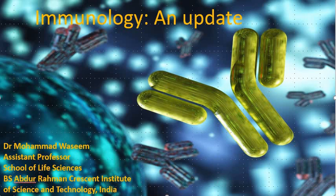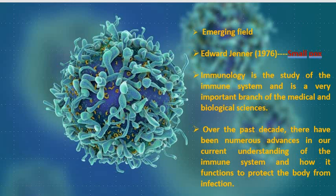Immunology is a new emerging field where immunologists are developing new treatments for major diseases affecting mankind, including infectious diseases such as influenza, Ebola, and COVID-19. The immune system is incredibly complex and we still have lots more to find out about how it works. Its origin is usually attributed to Edward Jenner, who discovered in 1796 that cowpox or vaccinia induced protection against human smallpox.